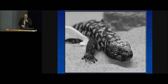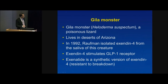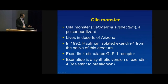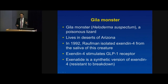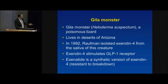This is the Gila monster, which lives in the Arizona desert and only eats a few times per year. Many years ago, Ralph Bernstein isolated a molecule called Exendin-4 from the saliva of this creature. Exendin-4 stimulates the GLP-1 receptor in the pancreas. Drug companies then developed Exenatide — a synthetic version of Exendin-4 resistant to DPP-4 breakdown — that stimulates the GLP-1 receptor to increase insulin production and make you feel fuller.